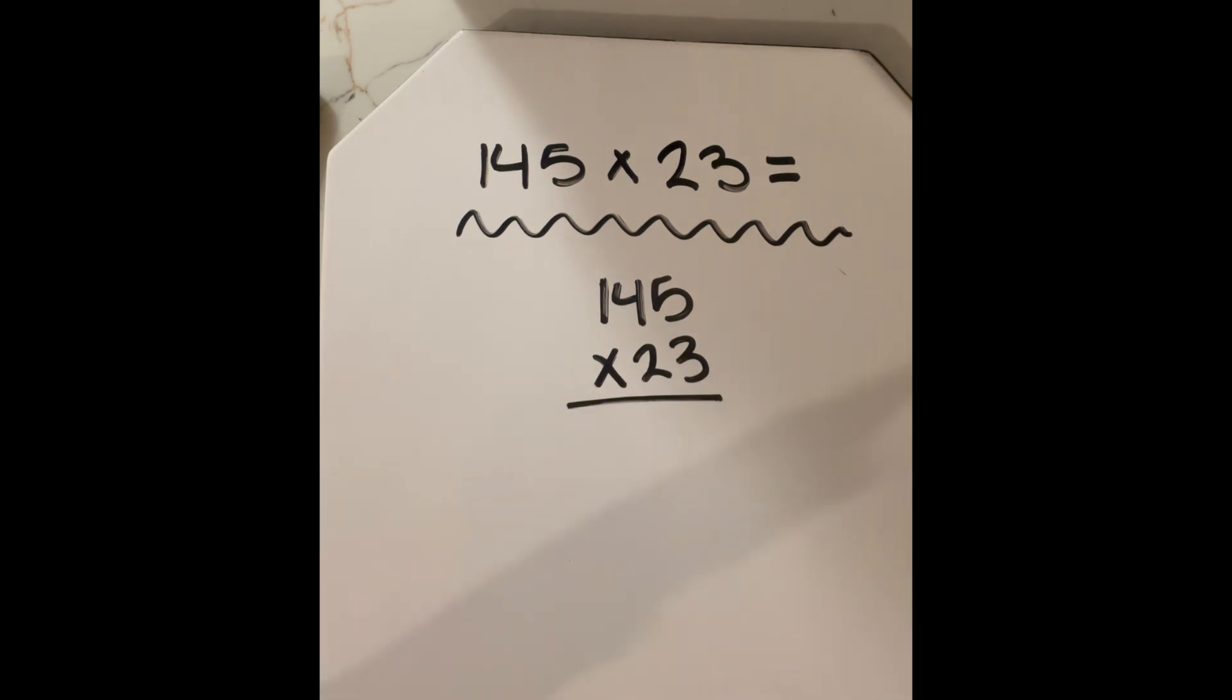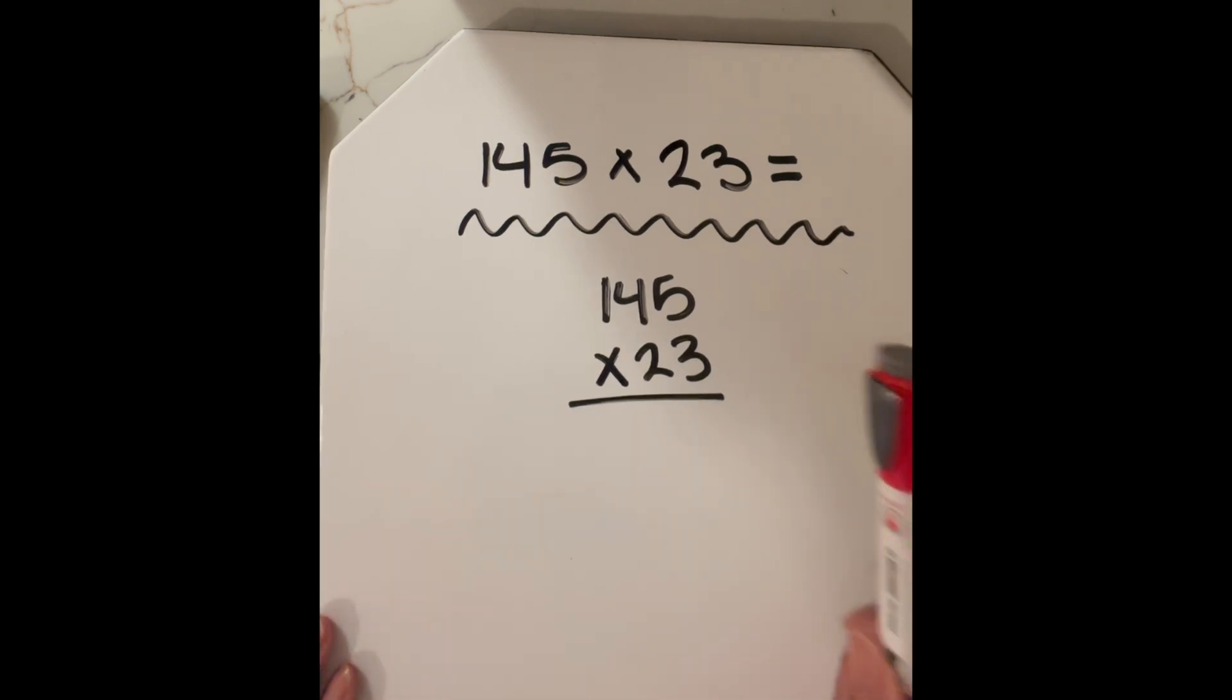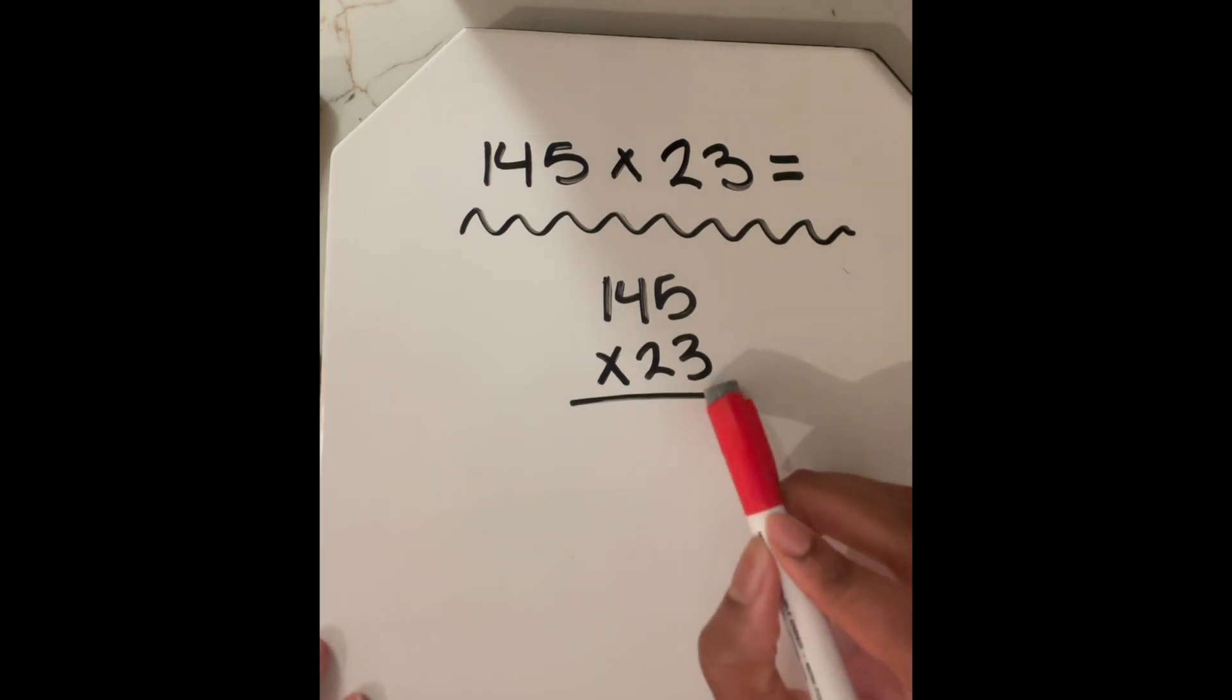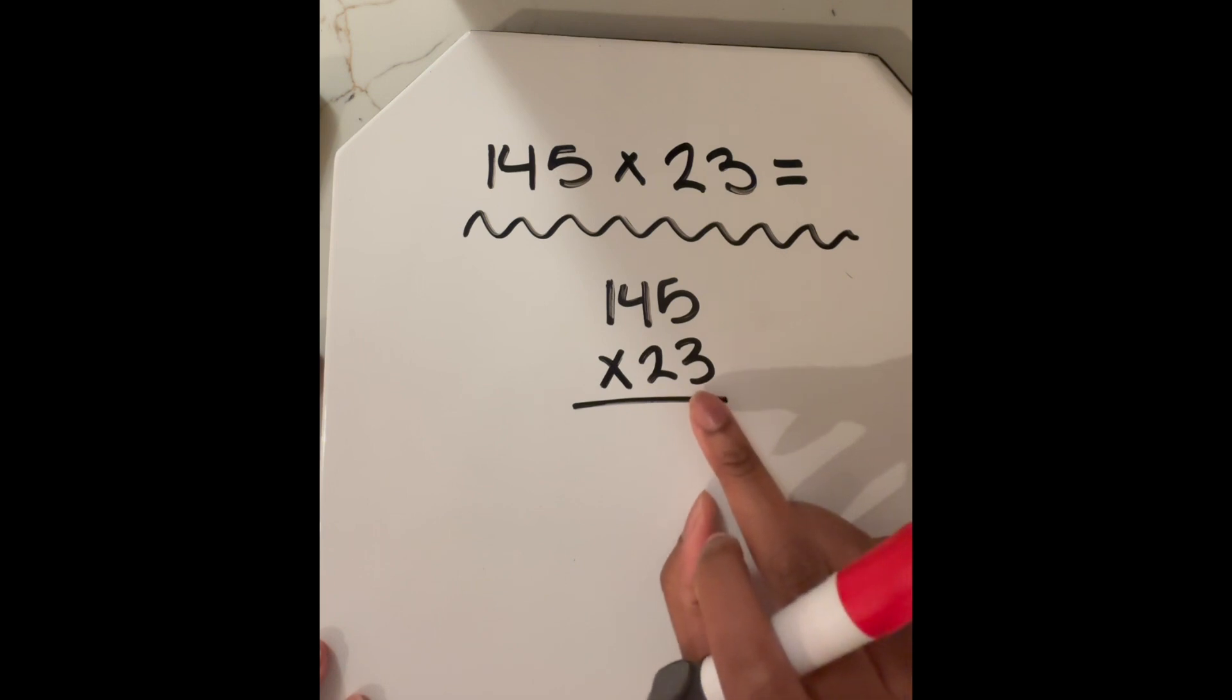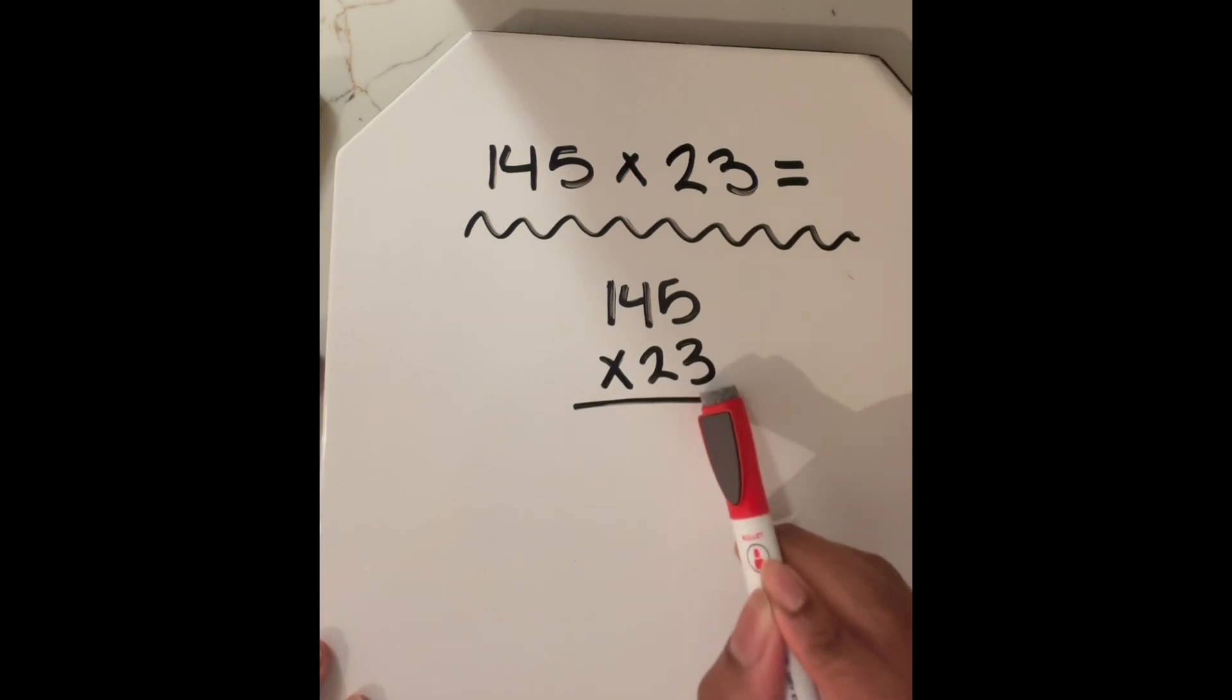And again, we're using a similar process from my previous videos. We're following that same process. It's nothing really new. We're just adding on to it. So we're going to start with this number down here, and we're going to multiply it by the digit right above it, the five. So three times five, we know is 15.